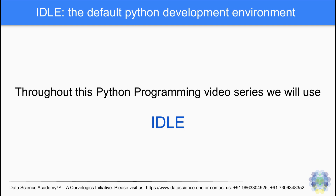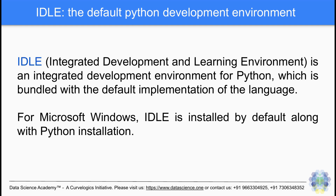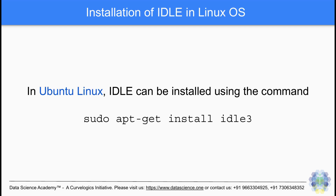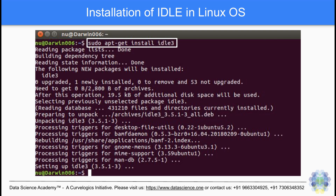Throughout this Python programming video series, we will use IDLE. IDLE is an integrated development environment for Python, which is bundled with the default implementation of the language. For Microsoft Windows, IDLE is installed by default along with Python. In Ubuntu Linux, we can use the command: sudo apt-get install idle3. Your IDLE interface would look similar to this screenshot.